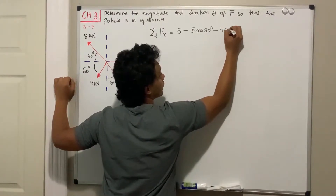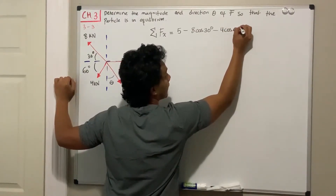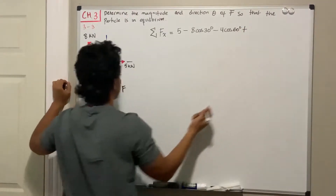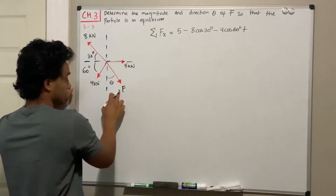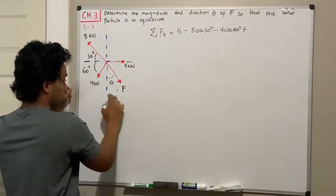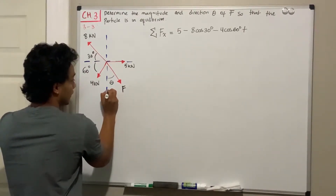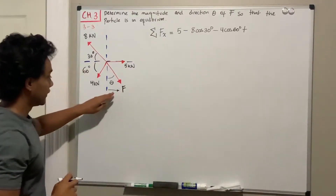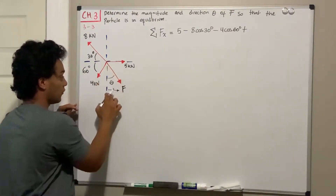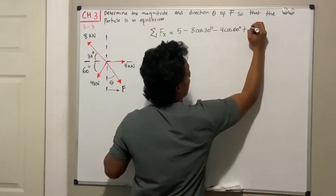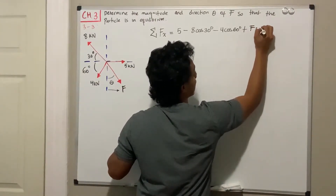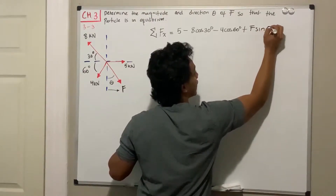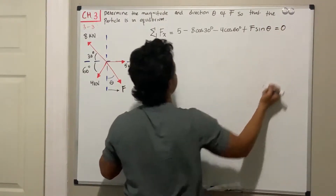We also add plus the force F going to the right. For F, the sine is the one that gives me the x-component because it is the opposite of the angle. So we have F sine of theta equals zero.